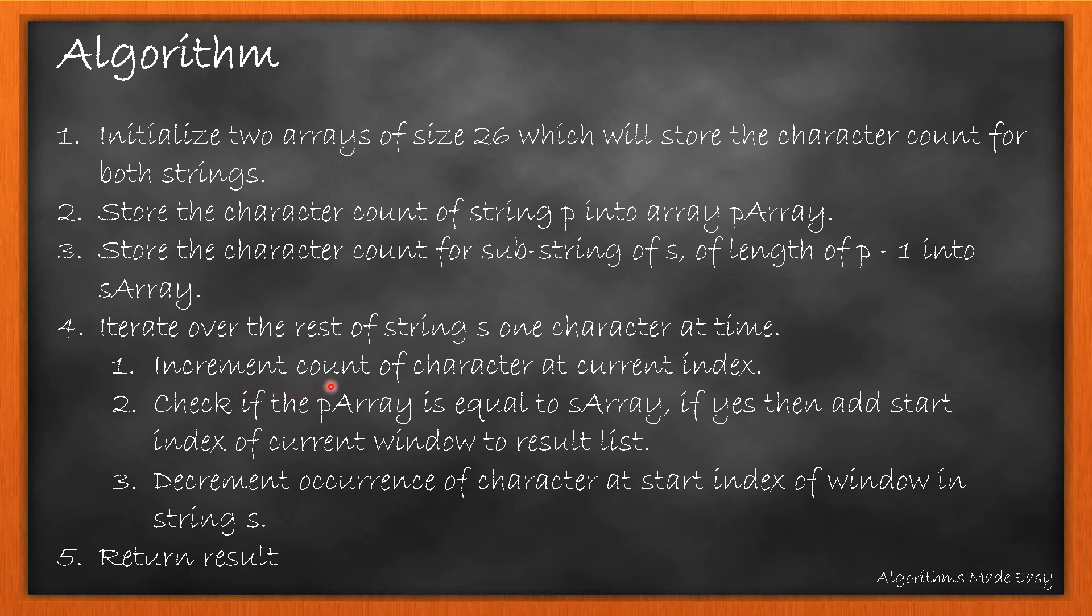In each iteration, we will first increment the count of characters at the current index in S array. Then, we will compare S array with P array. If both are equal, we will add the start index of the current window in the result list.